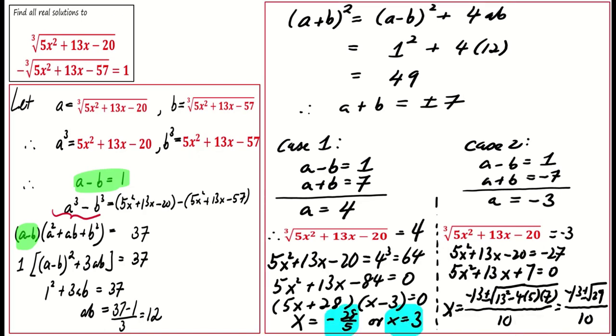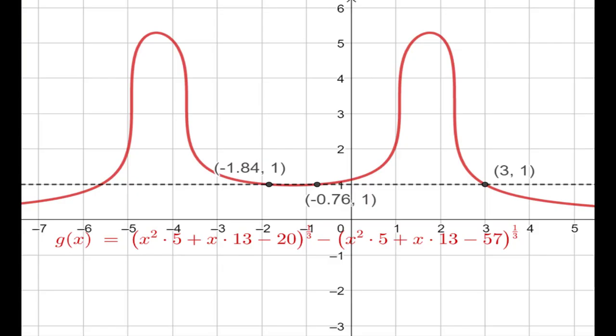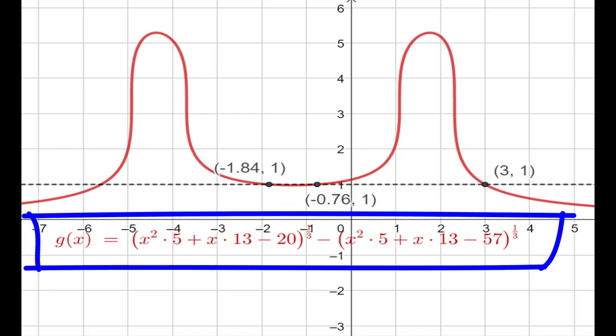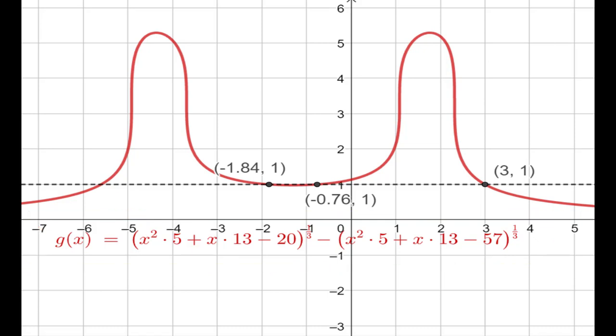While we have successfully solved the equation, here is an interesting observation. The graph of y = ∛(5x² + 13x - 20) - ∛(5x² + 13x - 57) is shown. The x-